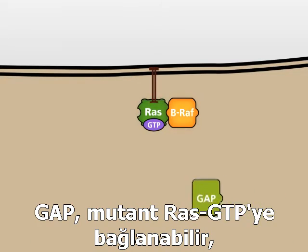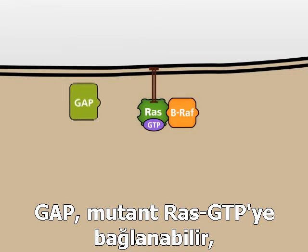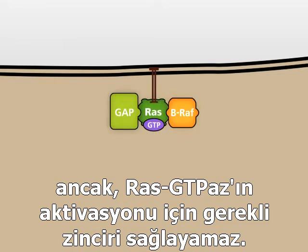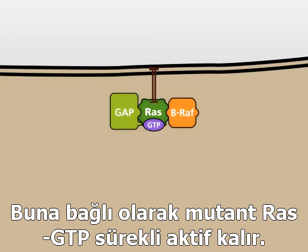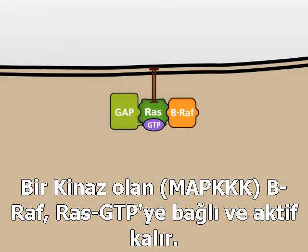GAP can still bind to mutated RAS in its GTP-bound form. However, GAP is not able to provide the domain that is crucial for the activation of the RAS-GTPase. GTP is not hydrolyzed to GDP. Consequently, mutated RAS-GTP stays active. The kinase BRAF stays bound to RAS-GTP and remains active.